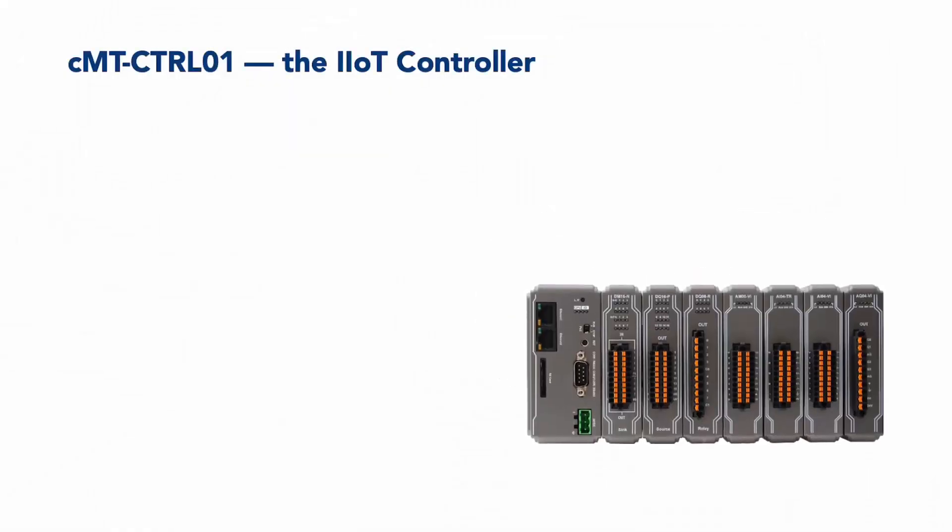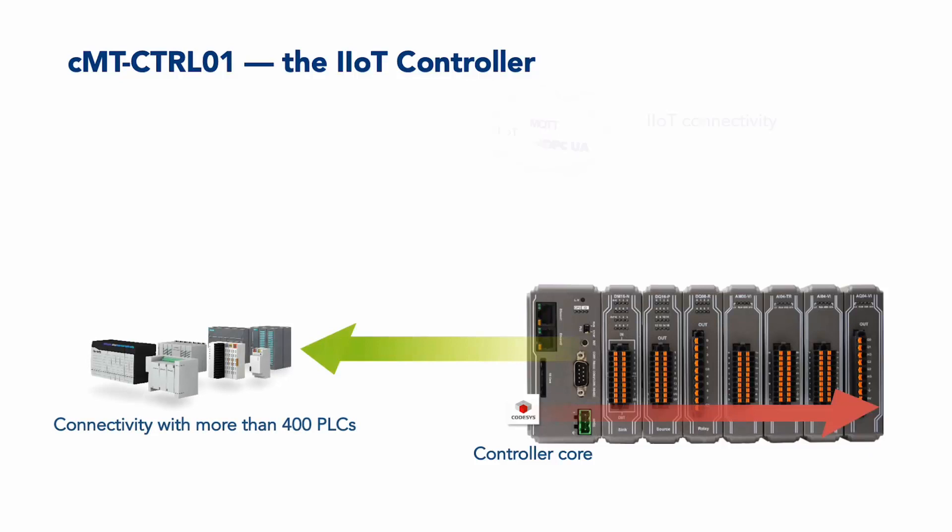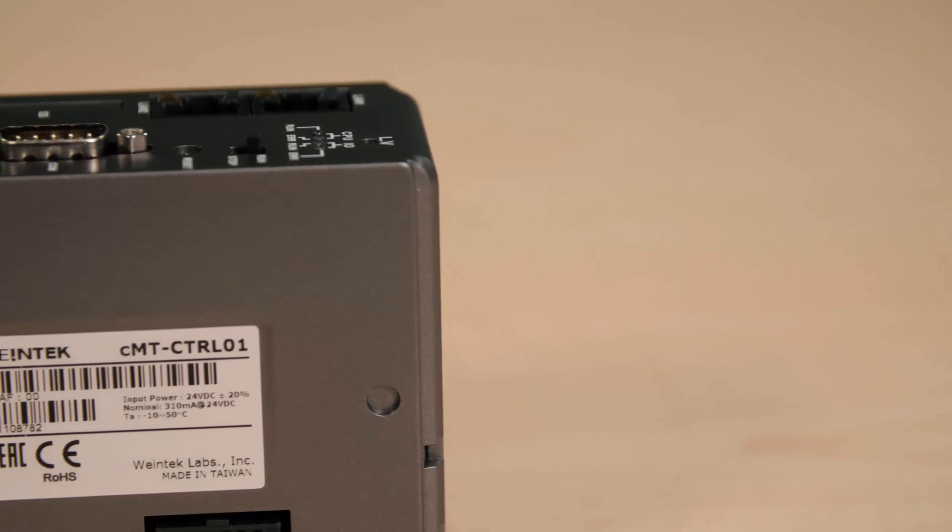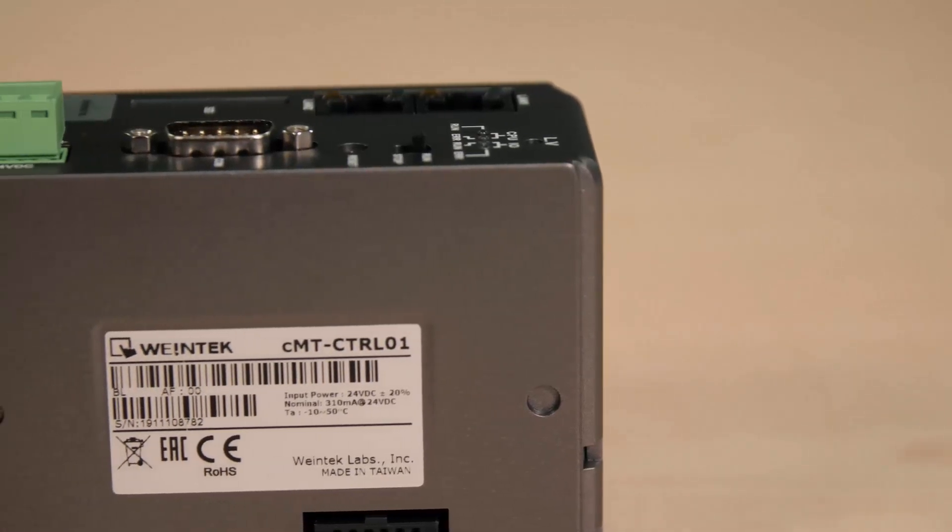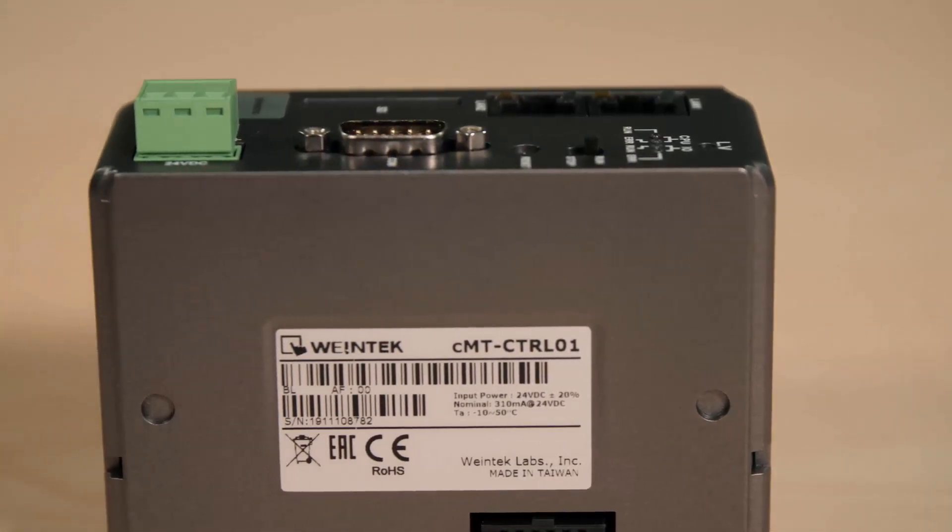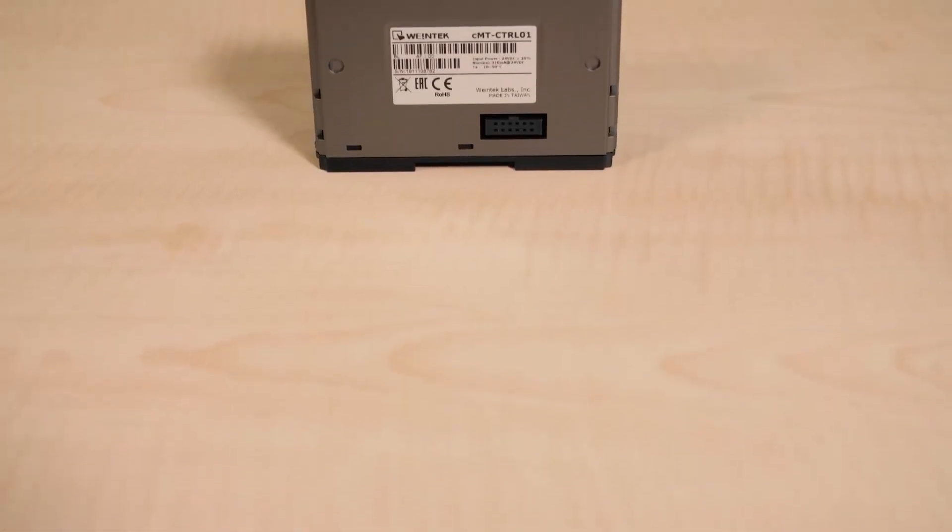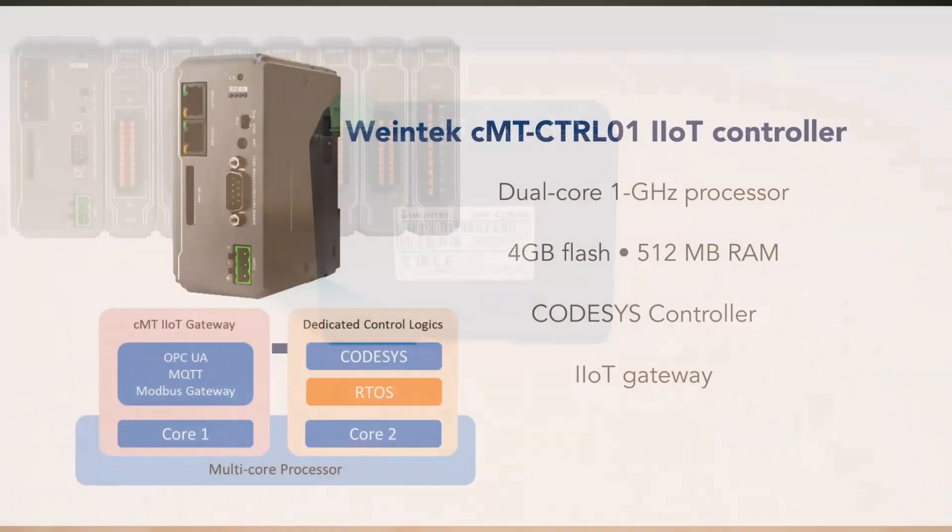Engineers can also use the optional EasyAccess 2.0 software to update the controller's CodeSys project and monitor operation status, which in turn helps minimize maintenance costs. With EasyAccess 2.0 push notifications, users get immediate notifications about operation errors on portable devices for quick troubleshooting.